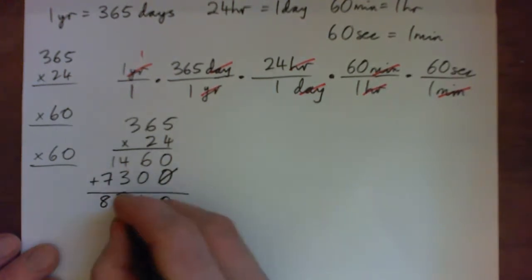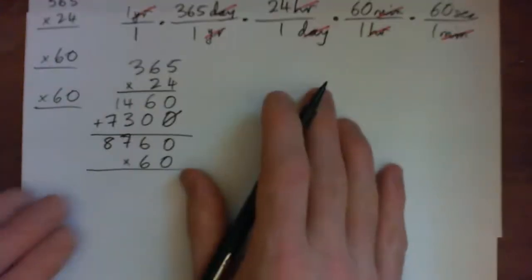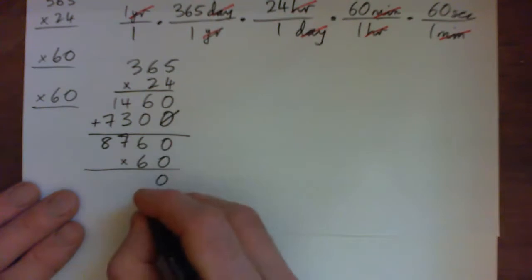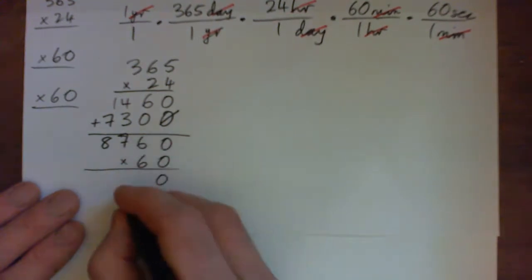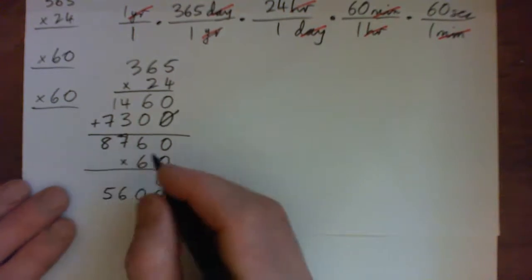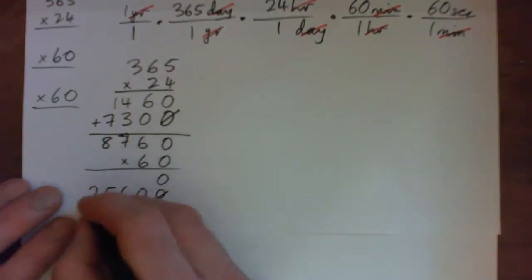Now multiply by 60. 0 times everything is 0, put down the 0. Multiply by 6: 6 times 0 is 0; 6 times 6 is 36, carry 3; 6 times 7 is 42, plus 3 is 45, carry 4; 6 times 8 is 48, plus 4 is 52. That gives 525,600.